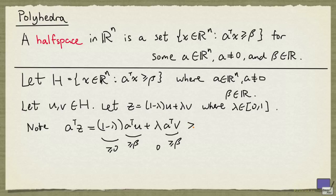So combining these inequalities, we can say that this is at least 1 minus lambda times beta plus lambda times beta, and this reduces simply to beta.